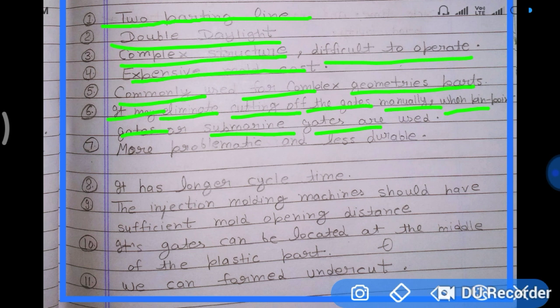The three-plate mold can use a submarine gate. The submarine gate is used to eliminate the need to manually cut the gate from the feed system, making separation of the feed system easy and automatic.